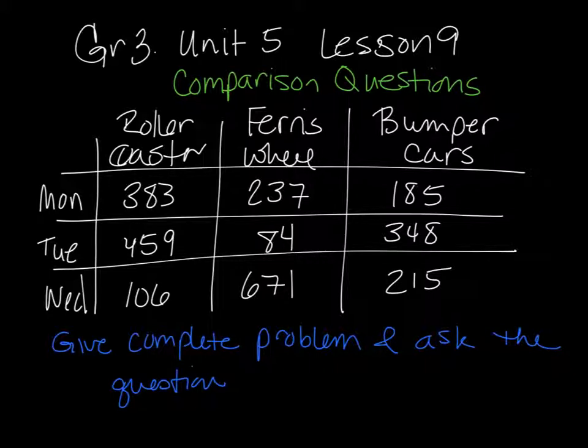Once again, we're talking about our tables and making sure we understand our vocabulary. We've got our columns, like the buildings, we've got our rows, like the movie theater. And we're making sure that we understand that 84 means that on Tuesday, there were 84 people that rode the Ferris wheel. So just go through the table and make sure they understand it.